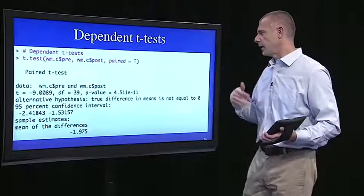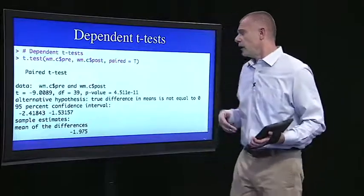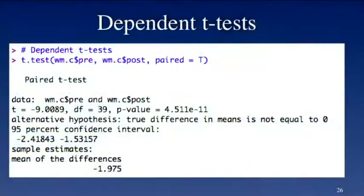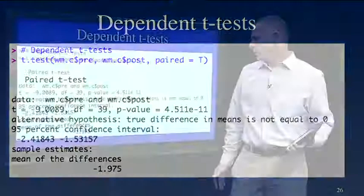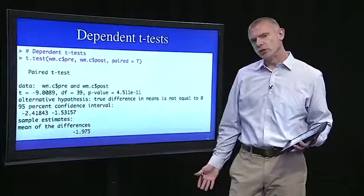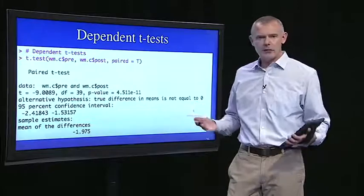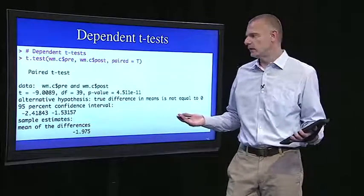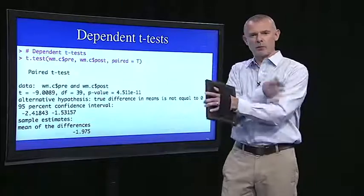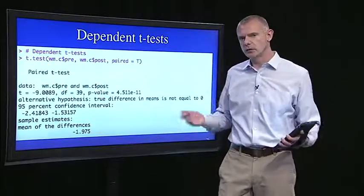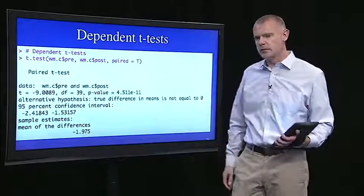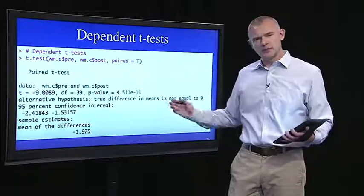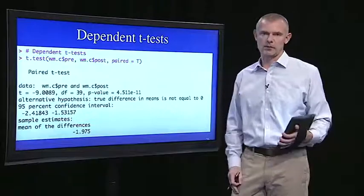So here's the output. I ran that script. And here's the first t-test for the control condition. And what we see is the scientific notation here. It's a really low p-value. It's a high t-value. So the mean difference is almost two. Why is it negative? Well, that's really arbitrary. It's because I put pre first and then post. If I flip them around, then it would be positive. Doesn't really matter. The p-value would still be the same. Notice the degrees of freedom is 39, because there were 40 subjects in the control condition.